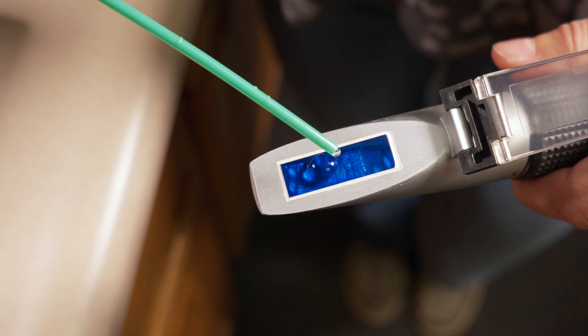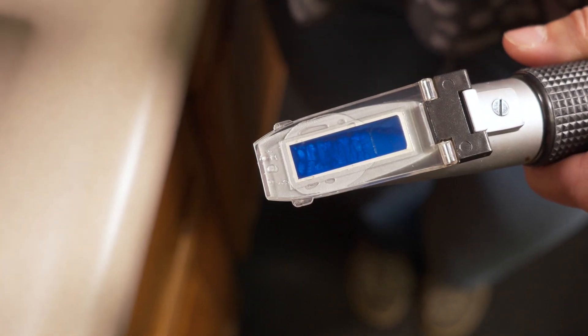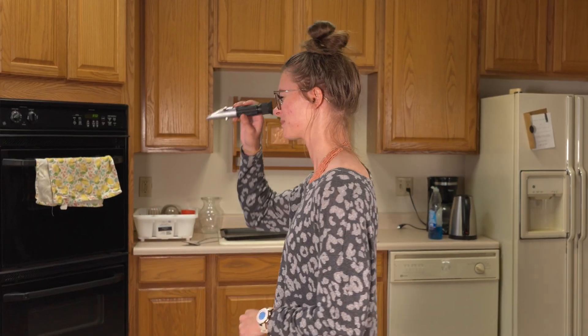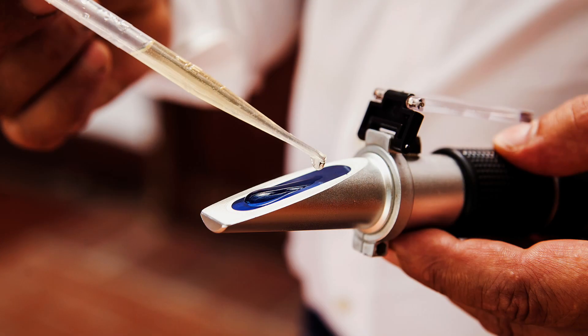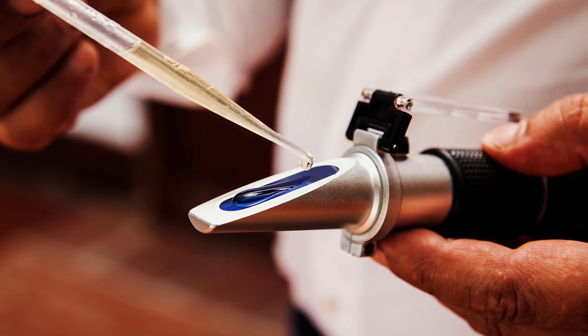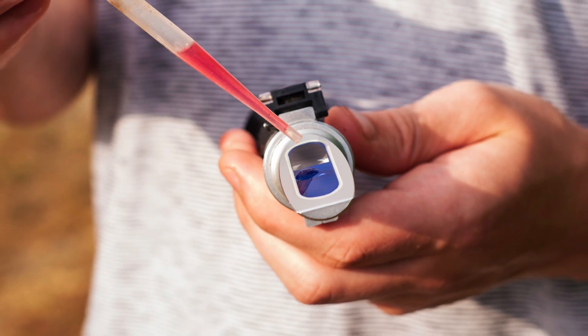For example, refractometers measure the concentration of sugar in aqueous solution in units called bricks. It's important to note that some types of refractometers only operate within a specific range. Therefore, it is extremely important to choose the correct type so measurements will be accurate and meaningful.